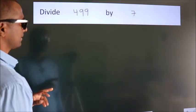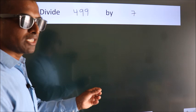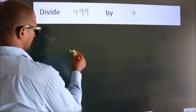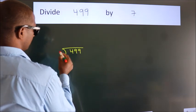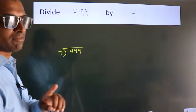Divide 499 by 7. To do this division, we should frame it in this way. 499 here, 7 here. This is your step 1.